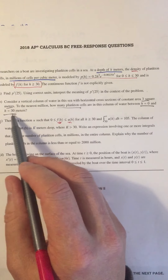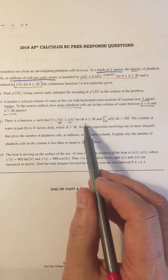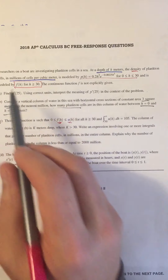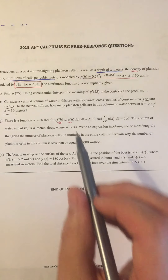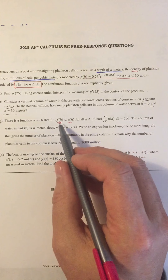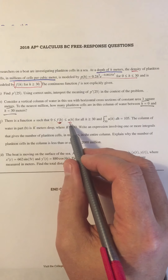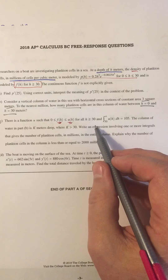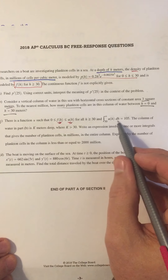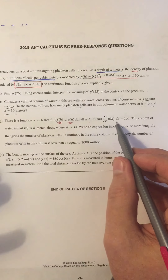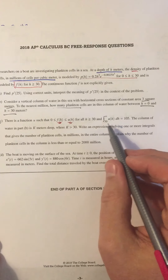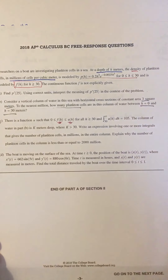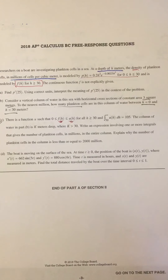The first two questions were about h less than or equal to 30; now we're looking at h greater than or equal to 30, which means we need f of h — a function they never explicitly defined. All they tell us is that f of h is less than some u of h, and that the integral of u of h from 30 to infinity equals 105.